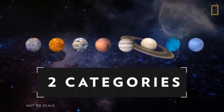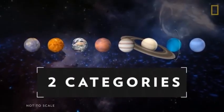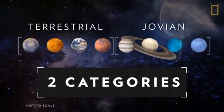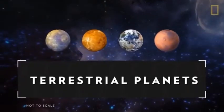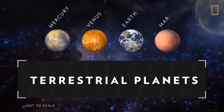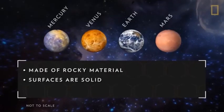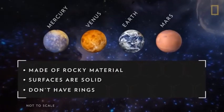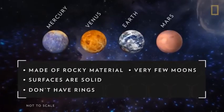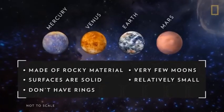Revolving around the sun are eight planets. The planets are divided into two categories based on their composition: terrestrial and Jovian. Terrestrial planets, including Mercury, Venus, Earth, and Mars, are primarily made of rocky material. Their surfaces are solid, they don't have ring systems, they have very few or no moons, and they are relatively small.